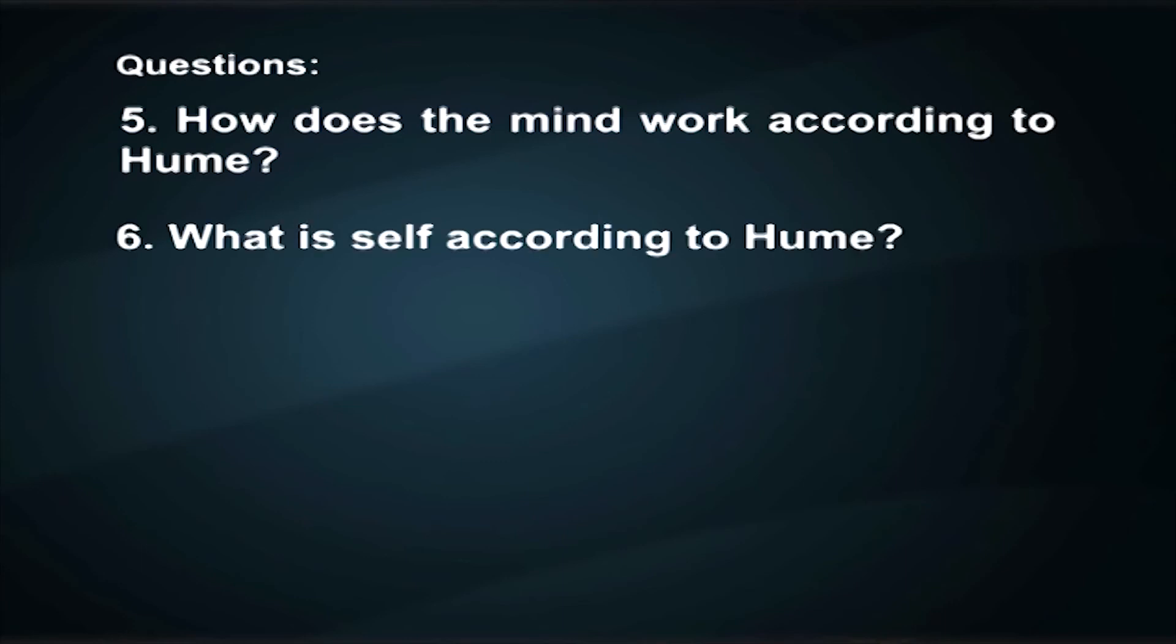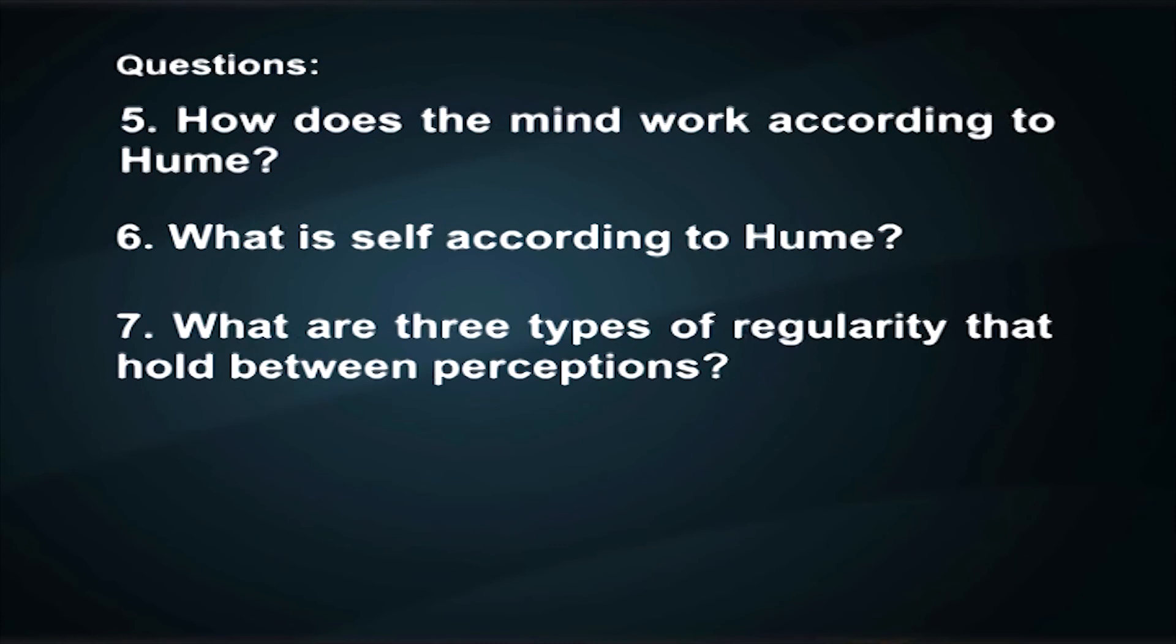What is self according to Hume? What are the three types of regularity that hold between perceptions? Hope that you may go through the reference books for further reading.